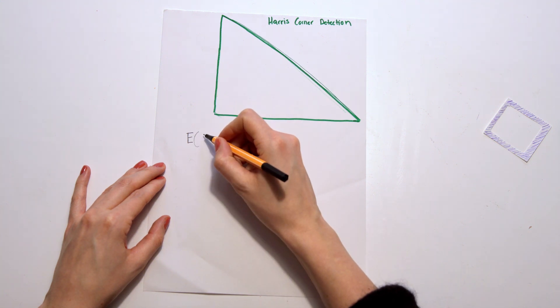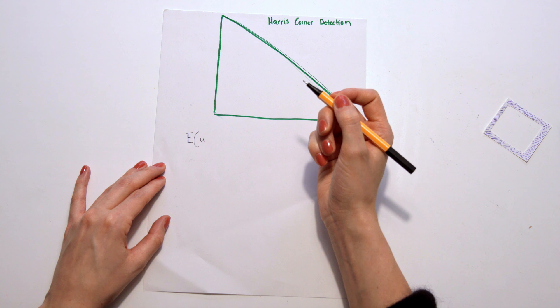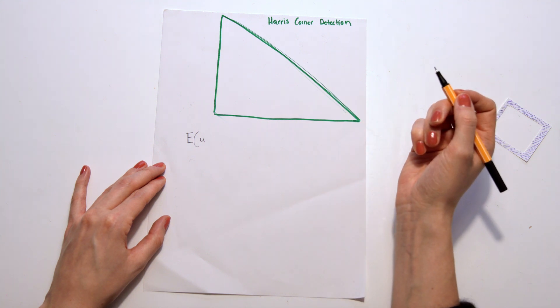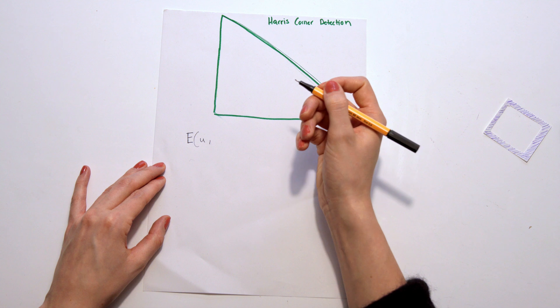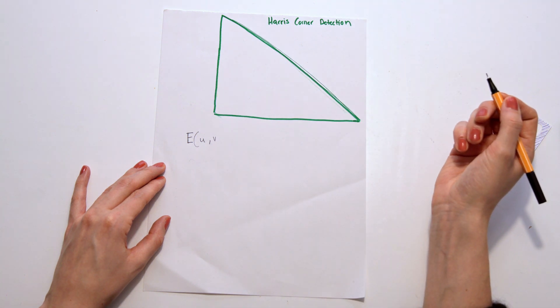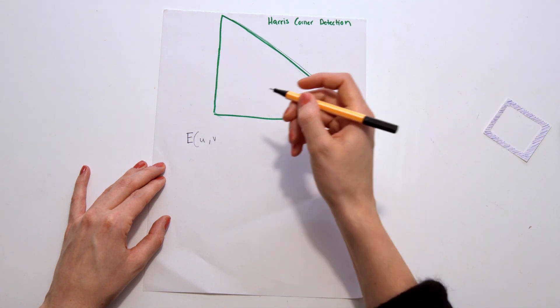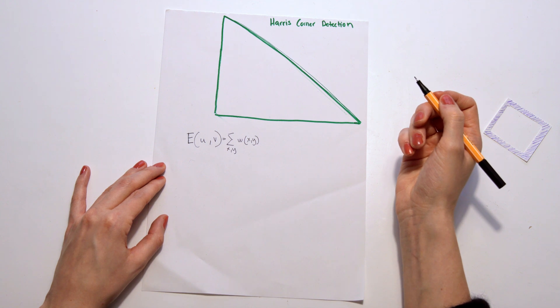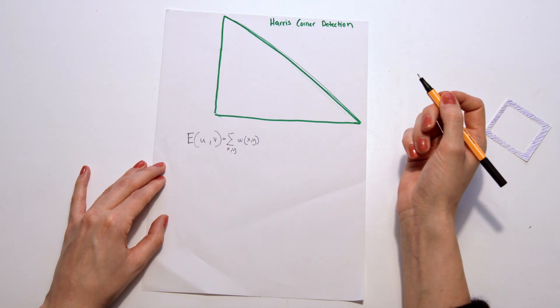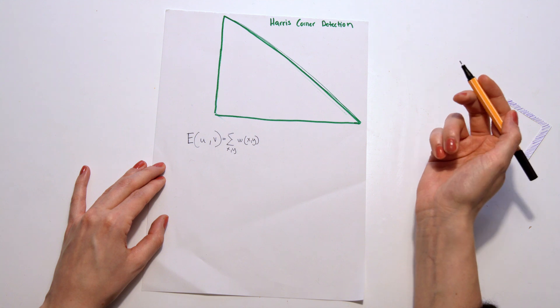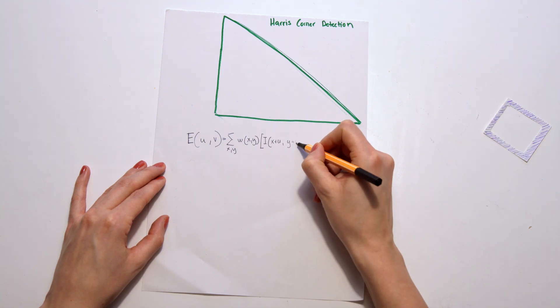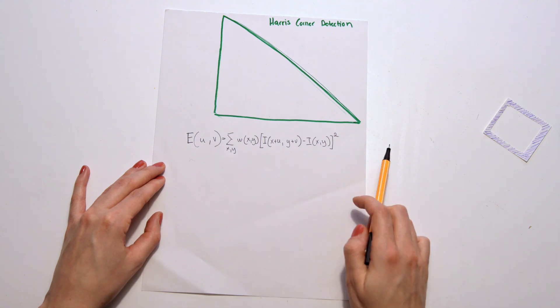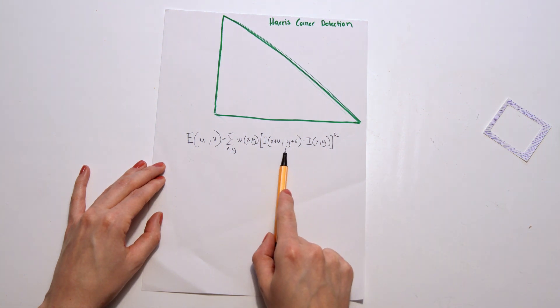And we have a little equation for that. So we have U, which is the window's displacement in the X direction, and we have V, which is the window displacement in the Y direction. And we look for every X and Y in the whole image. So W will be the window, the position basically of X and Y. So we have this equation, and this will be the intensity of the moved window, and this will be the intensity of the original image.